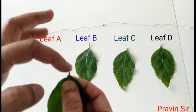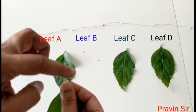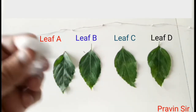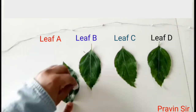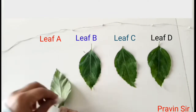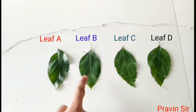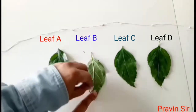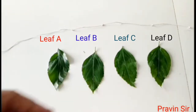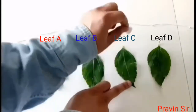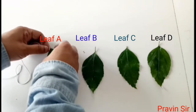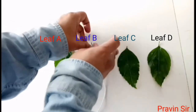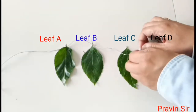Apply vaseline on the plucked end of the petiole in all four leaves. Now, with the help of cotton, apply vaseline on leaf A on the upper surface as well as the lower surface. On leaf B, apply vaseline on the lower surface. On leaf C, apply vaseline on the upper surface. On leaf D, no vaseline is to be applied. Tie the different leaves with string so that they are equidistant and the surfaces are properly exposed to sunlight.